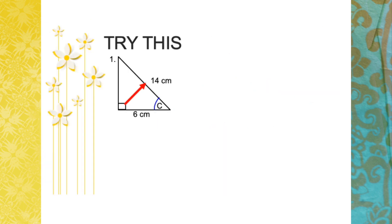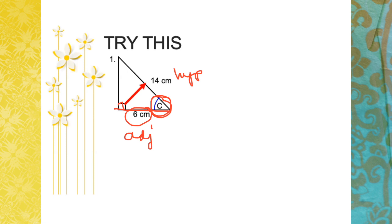To find a missing angle from a right triangle, we need to know two of the sides. We then choose the appropriate ratio — sine, cosine, or tangent — and use the calculator to identify the angle. For example, if we are asked to find angle C, first label the sides: the side opposite the right angle is always the hypotenuse, and the side beside the reference angle is the adjacent. Since hypotenuse and adjacent are given, we use cosine of C equals adjacent over hypotenuse.